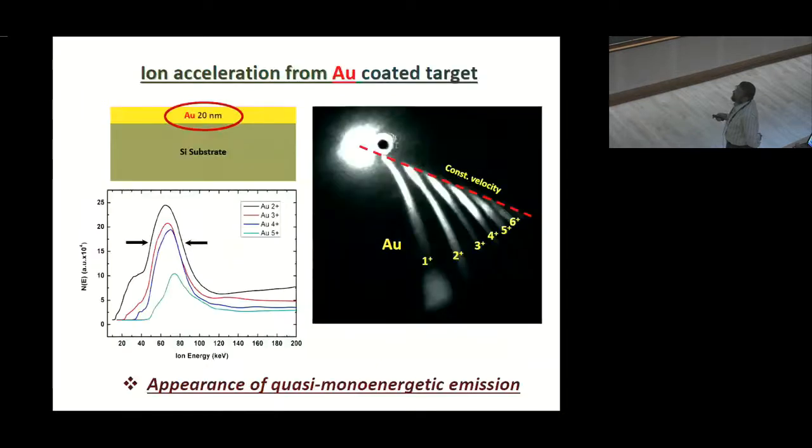Later on we decrease the gold nanolayer to 220 nanometer, in that case also we got same features but see here we are getting bunching of the gold ions. You can see these are pronounced peaks which are appearing here, these are taken across the parabola. So, one can see bunching. So, this is a monoenergetic bunching appears in case of gold. If you reduce the gold layer thickness, it is same substrate.